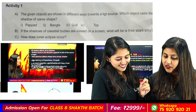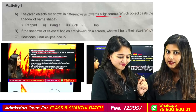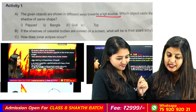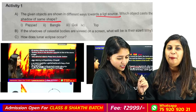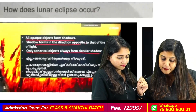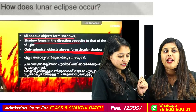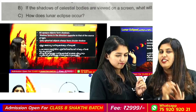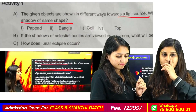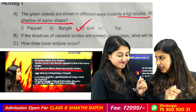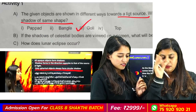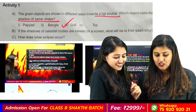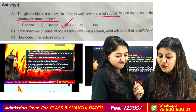The given objects are shown in different ways towards a light source. Which object casts a shadow in the same shape? Only spherical objects cast shadows in the same shape.